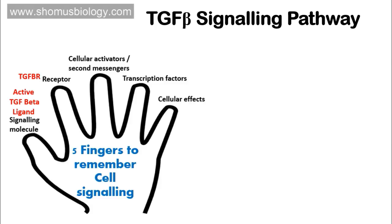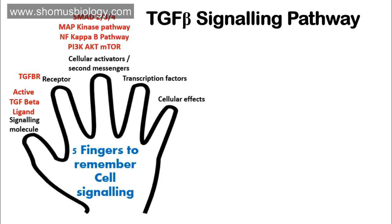The third important parameter is cellular activators or second messengers. TGF beta signaling works in two different pathways: one is the canonical pathway and the other is the non-canonical pathway. The canonical pathway uses proteins known as SMAD — SMAD 1, 2, 3, and 4. The non-canonical pathway involves interactions with other signaling pathways such as the MAP kinase pathway, NF-kappa B pathway, and PI3K/AKT/mTOR pathway.